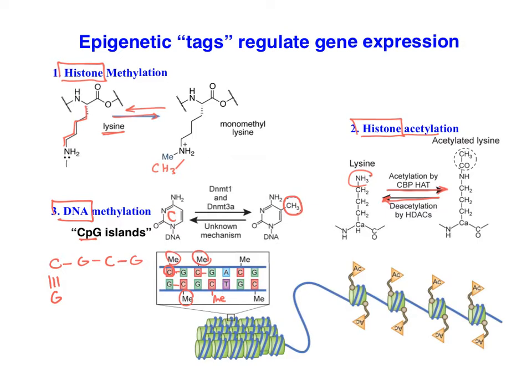What's kind of nice is that if we have a C next to a G on one strand, we know we're going to have a C next to a G on the other strand of DNA. So we're going to put both strands to be methylated.